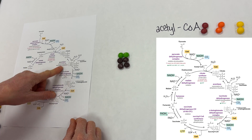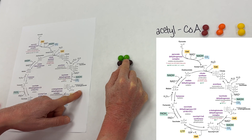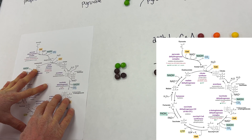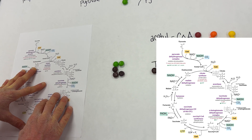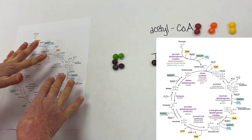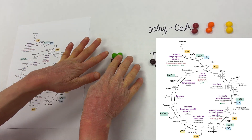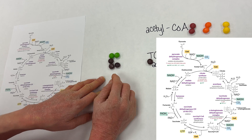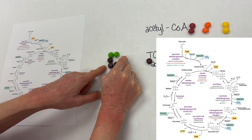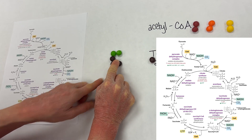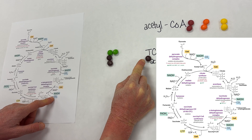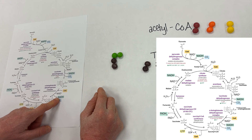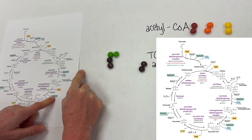The first one, isocitrate dehydrogenase, is going to remove the middle carbon. There are some rearrangement steps — isomerization and all that — but we're just focusing on the carbon backbones. We think about losing this middle CO2, and then we lose the bottom CO2. Those were both coming from our oxaloacetate, not from the acetyl-CoA.